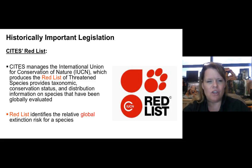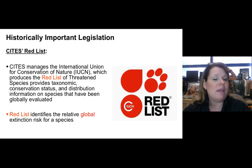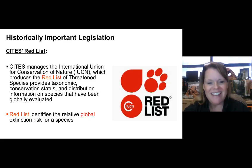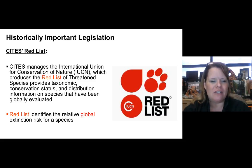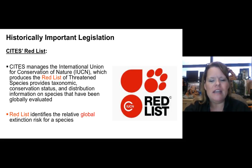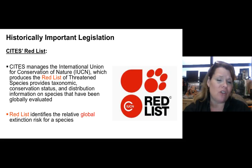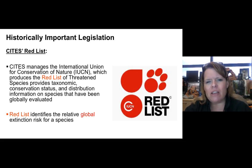CITES manages the International Union for Conservation of Nature, known as the IUCN. The IUCN is responsible for maintaining and updating, with good scientific data, something called the Red List — a guaranteed test question. The Red List covers threatened and endangered species across the globe, looking at taxonomic conservation status and distribution information of globally evaluated species. The U.S. ESA list and the international Red List may not always agree, which sometimes confuses the public.